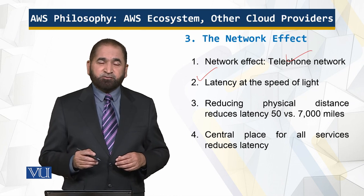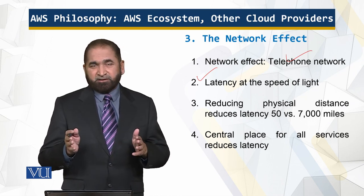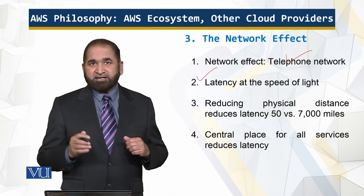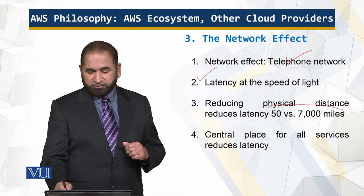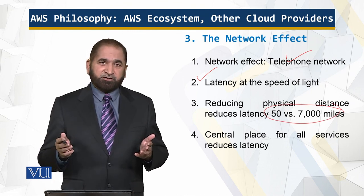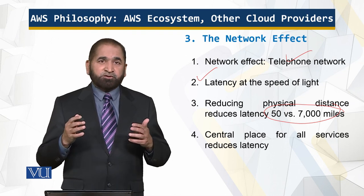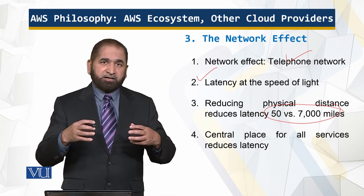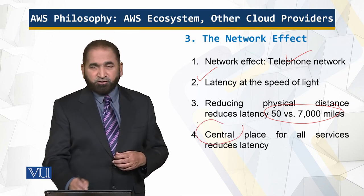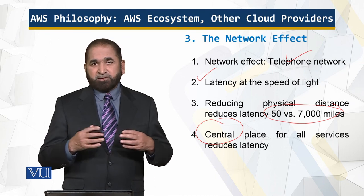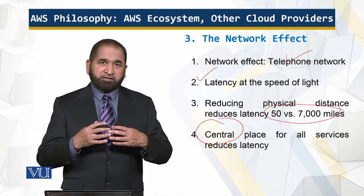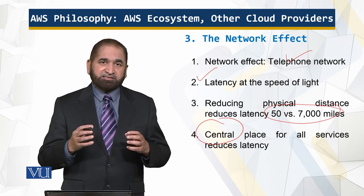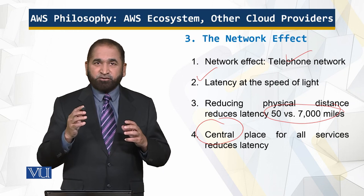Although signals move at the speed of light, they must be routed across the internet, and there is latency — the time it takes for a signal to move from point to point. That latency is visible over a distance of 50 miles versus 7,000 miles. With AWS and the network effect, all services are grouped at a central place, and when users connect there, signal passing occurs at that central location, resulting in low latency and fast applications.